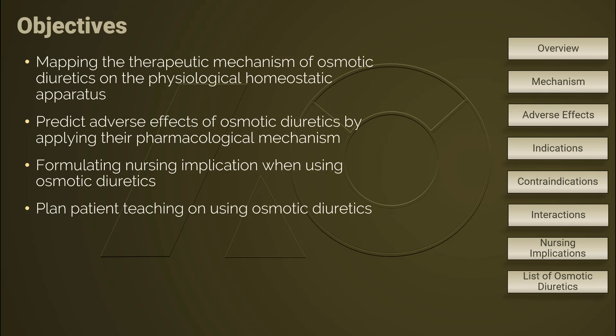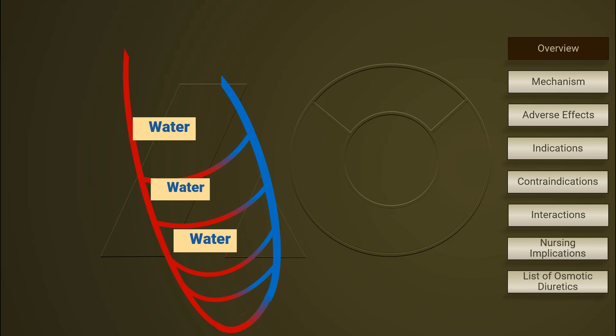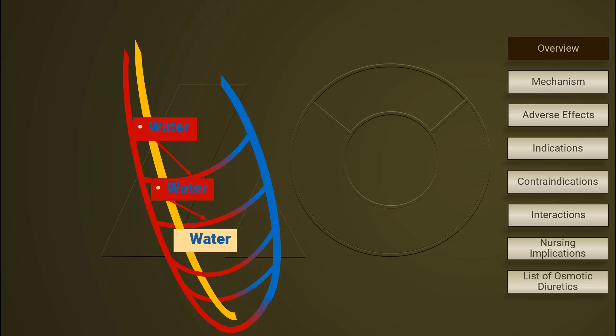First of all, let's quickly review the physiological function of the descending loop of Henle. Over here, osmolarity of urinary filtrate is increasing as more and more water is being reabsorbed into the blood.